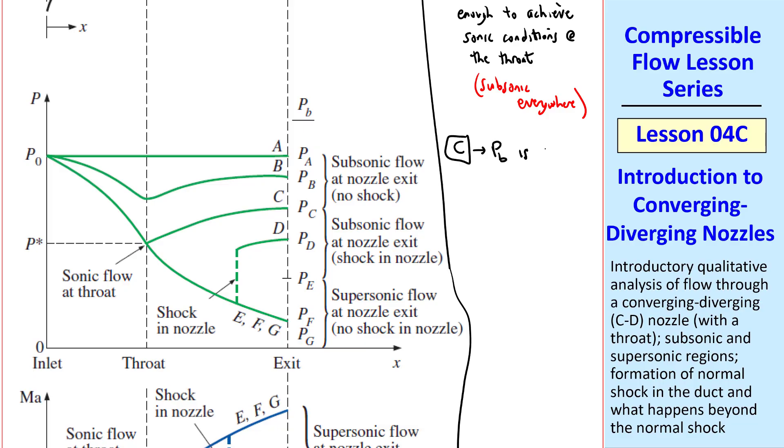Case C is when Pb is just low enough to make the throat sonic. In other words, pressure goes down to P star at the throat, but Pc is up here where the flow remains subsonic. The flow is always subsonic upstream of the throat, but in this case, it's sonic at the throat, but subsonic everywhere else. So it's subsonic everywhere except right at the throat. Something I want you to notice, Pc is bigger than P star. This may not be intuitive, but because this flow is subsonic in the diverging part, pressure rises like a subsonic diffuser.